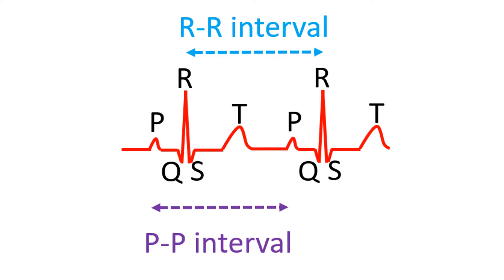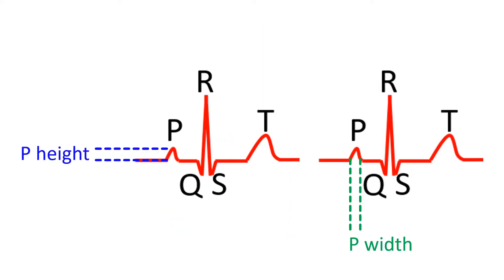The heart rate is measured in ECG from the interval between two consecutive R waves — it is actually the rate of the lower chambers or the ventricles. If the rate of the P waves is different from that of the R waves, it has to be measured separately from the PP interval. Rate of P waves will give the rate of the upper chambers. Both the width and height of the P wave are measured to assess enlargement of the upper chambers or the atria.